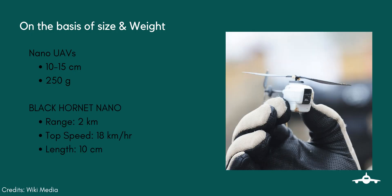For example, the Black Hornet Nano is a military unmanned aerial vehicle developed by FLIR Dynamics AS of Norway and in use by the armed forces of various countries, with a length of 10 centimeters and a range of 2 kilometers.